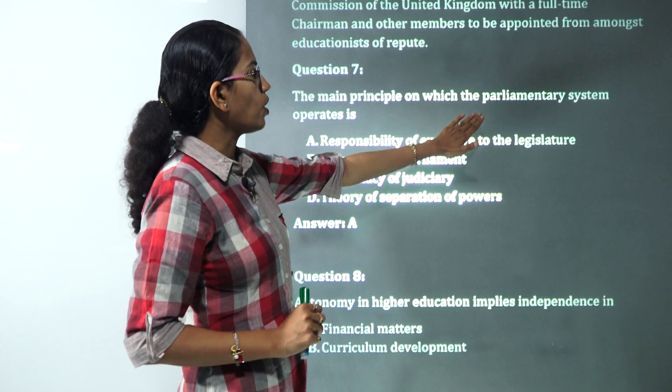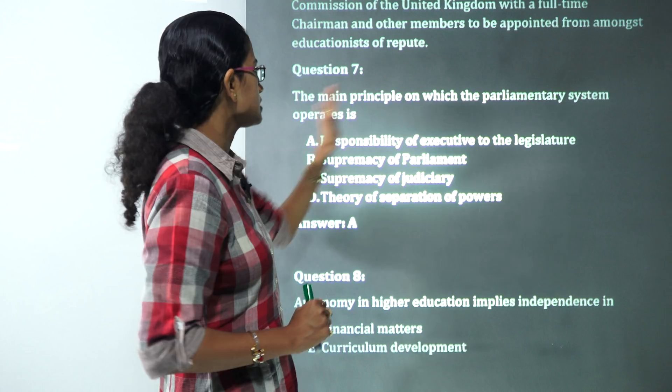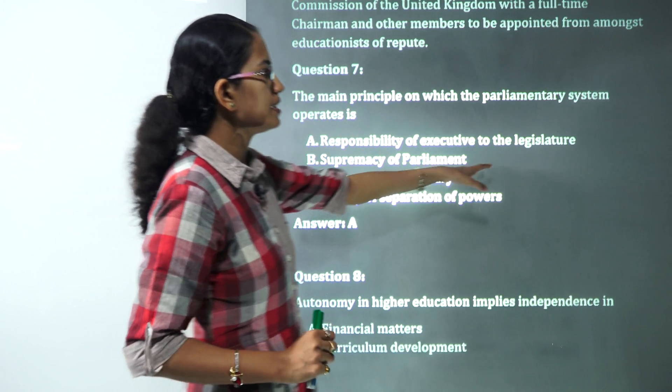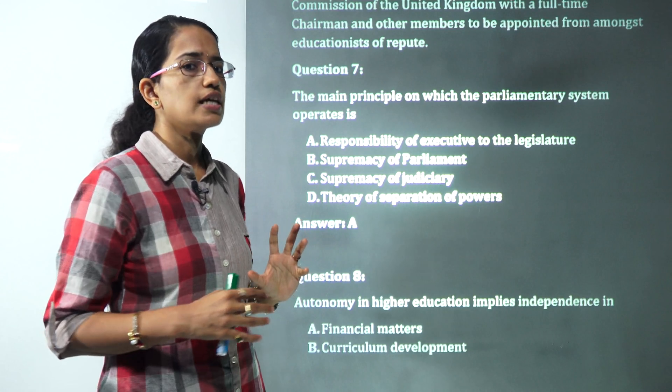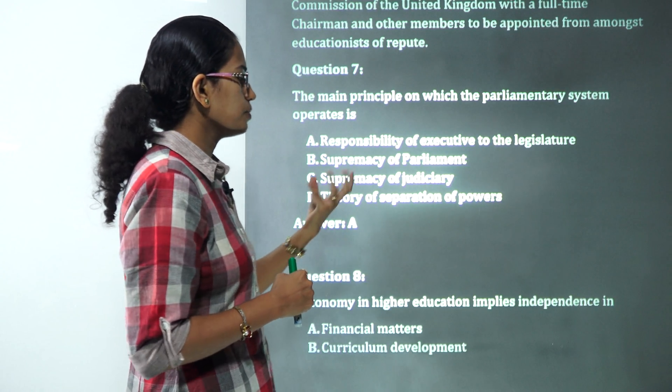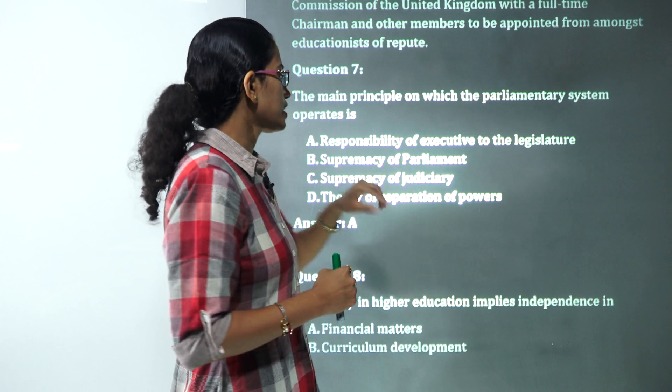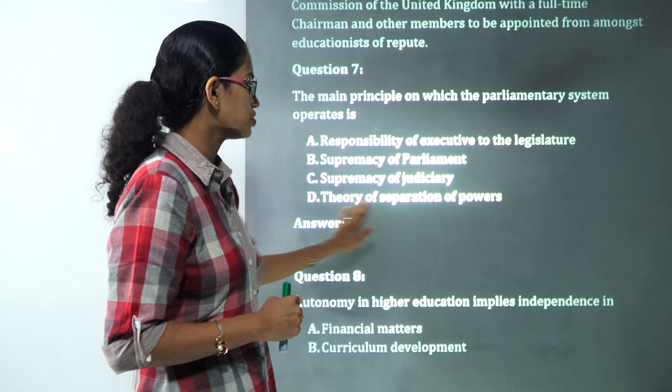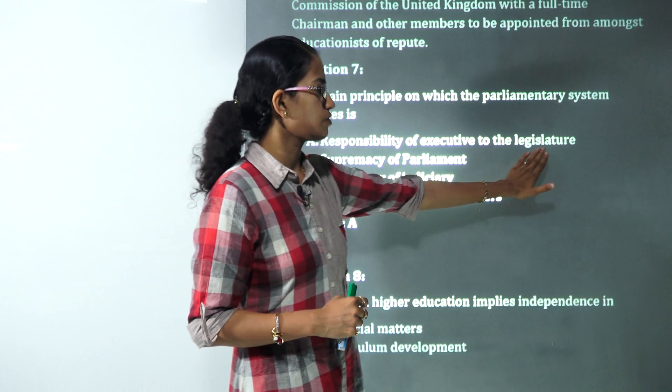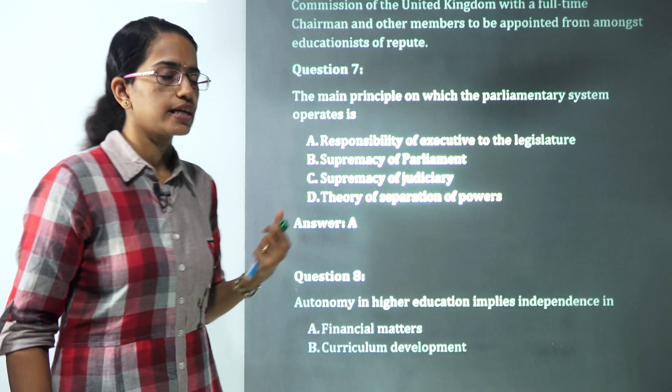The main principle on which the parliamentary system operates is. Parliament comprises of Lok Sabha and Rajya Sabha. It's basically the legislature that you are trying to explain. But you are trying to explain the responsibility of the executive to the legislature. So you do not have anything to do with the judiciary. The correct answer here would be A.